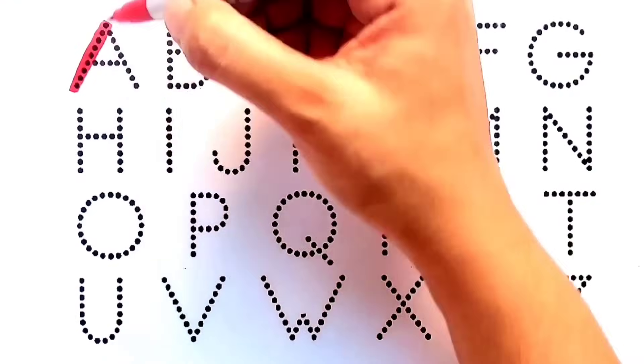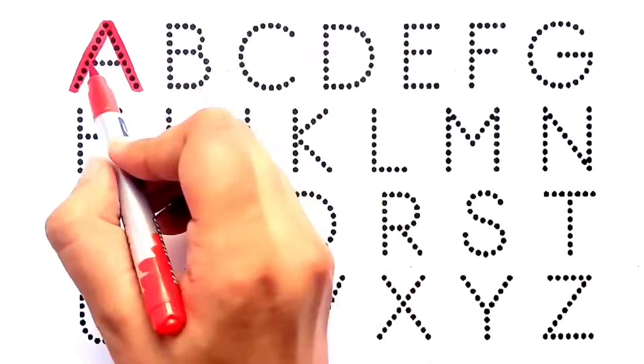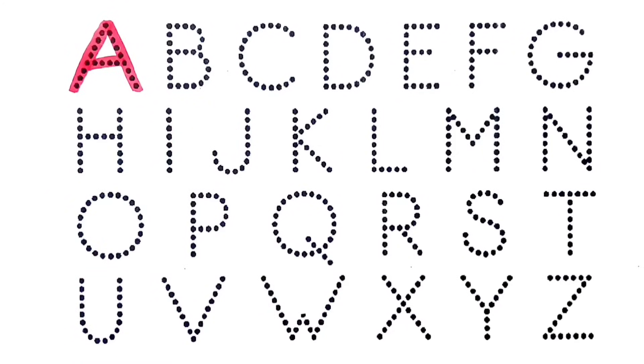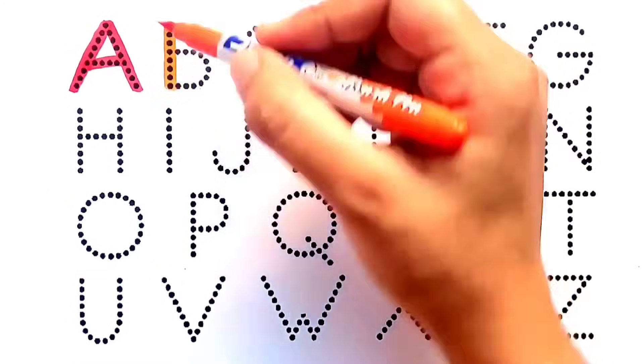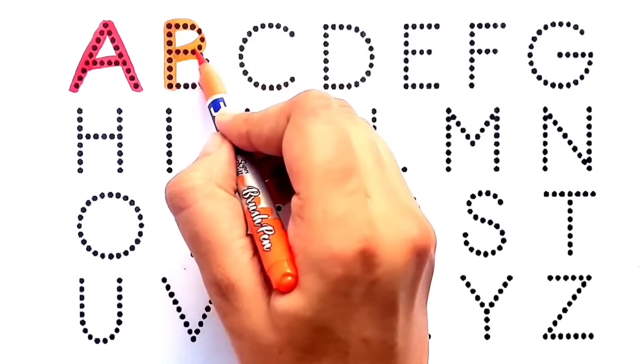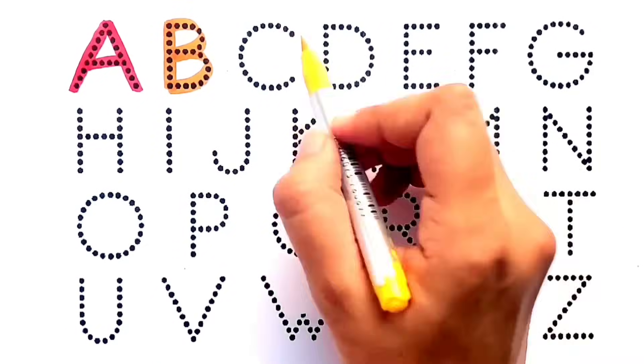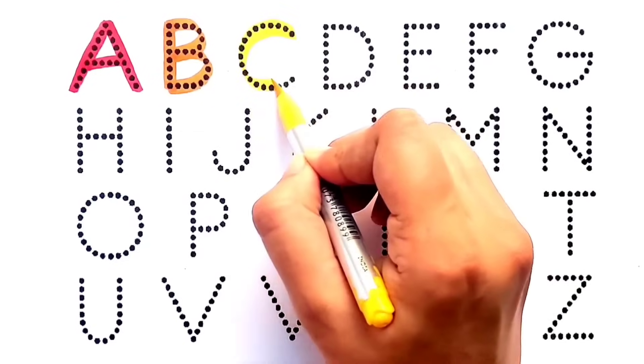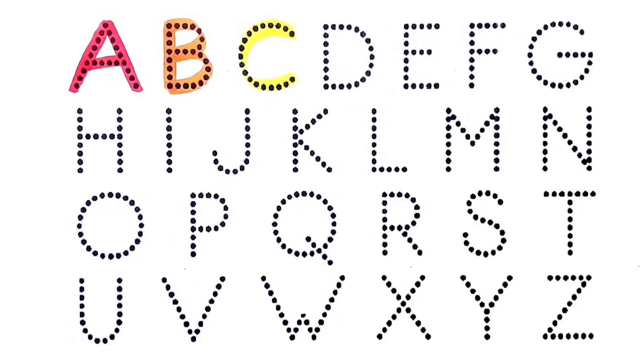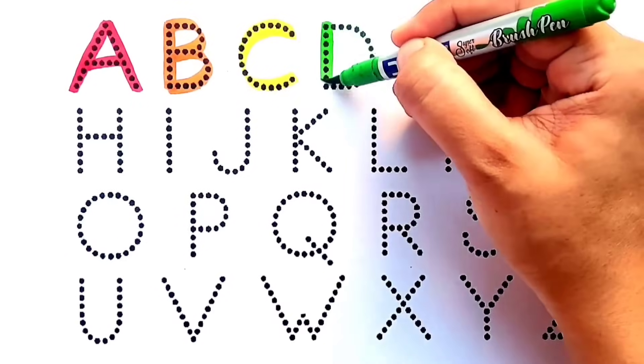Red color: A, A for apple. Orange color: B, B for ball. Yellow color: C, C for cat. Light green color: D, D for dog.